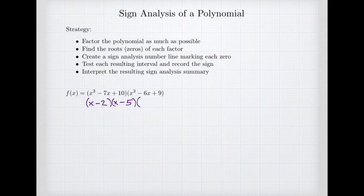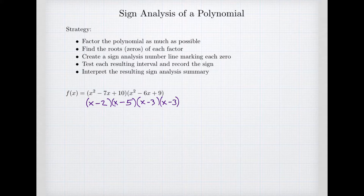Next we look at the second quadratic: x squared minus 6x plus 9. The constant term is 9 and the leading coefficient is 1. We're looking for factors of 9 that add to negative 6. We fairly soon realize that's x minus 3 times x minus 3. So let's rewrite this polynomial in its fully factored form: we have x minus 2 times x minus 5 times x minus 3 squared, since that factor appeared twice.